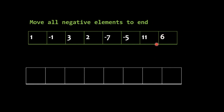The basic approach we will use is to traverse the array. If we find a positive number, we store it first. We store all the positive numbers first, and then we store all the negative elements.